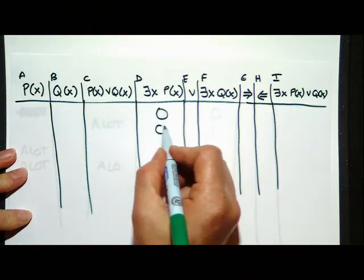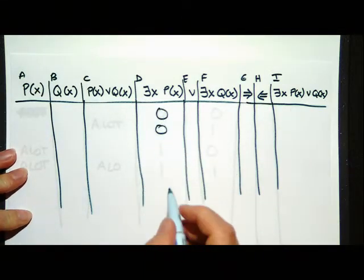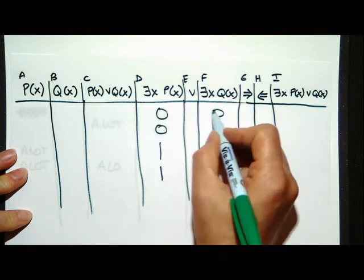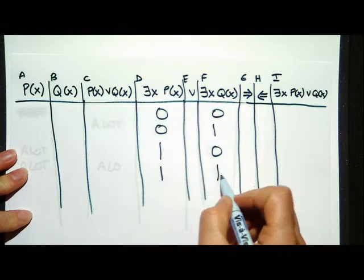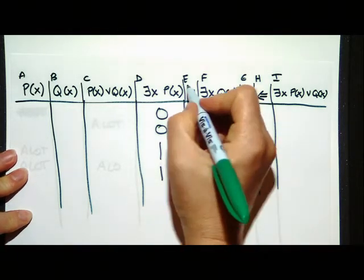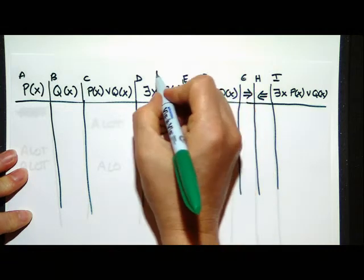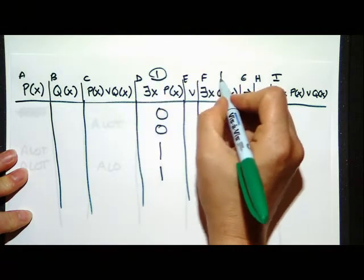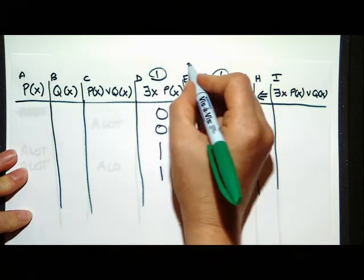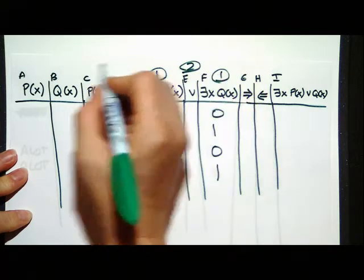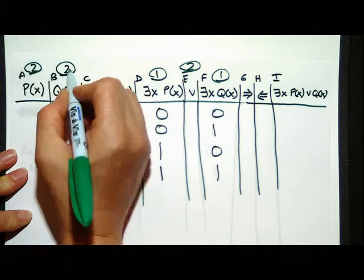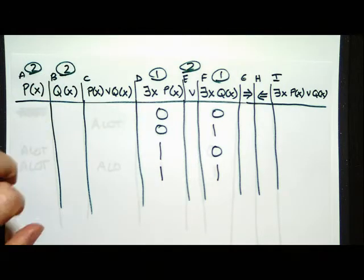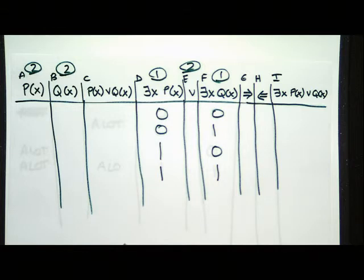We said we could fill out columns D and F first, which is what we should do. Are there any other columns I can fill out easily? After D and F, I can now do columns A, B, and E. I can't do anything else yet.